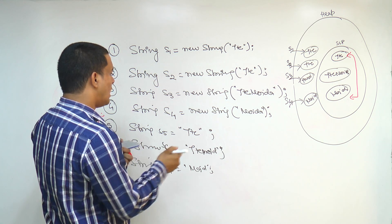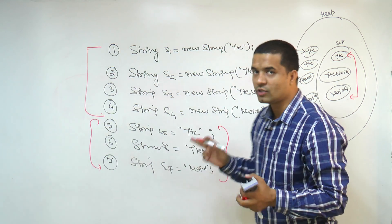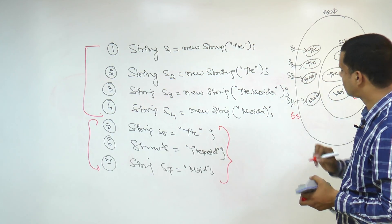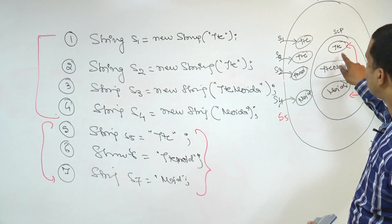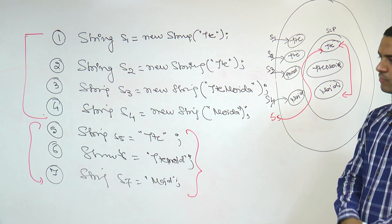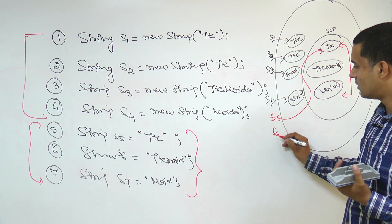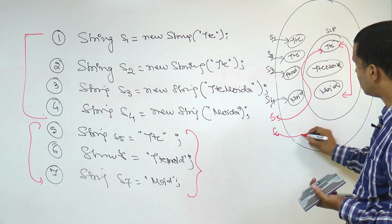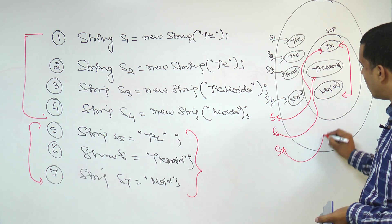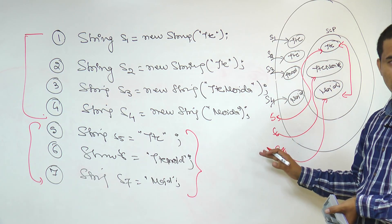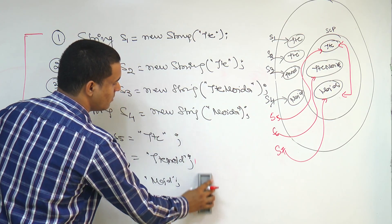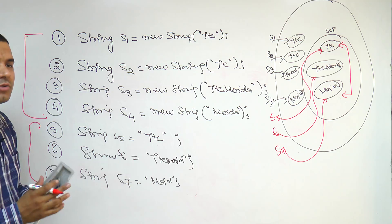Now, for the without-new-keyword statements in red: S5 = "JTC" — it checks inside the pool; JTC is already available, so it points to it without creating a new literal. S6 = "JTC Noida" — JTC Noida is already inside the SCP, so it points to that. S7 = "Noida" — already there inside the pool, so it points to that existing literal.